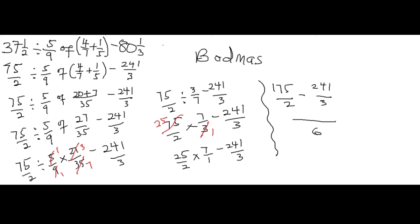Now we find the LCM of 2 and 3, which is 6. Three goes into 6 three times: 3 times 175 gives 525. Two goes into 6 three times... two goes into 6 three times: wait — 2 goes into 6 three times: 3 times 241 gives 482. Wait — actually 2 goes into 6 three times giving 525, and 3 goes into 6 two times giving 482. So we get 525 minus 482 over 6, which equals 43/6. Converting back to a mixed fraction: 6 times 7 is 42, remainder 1, so the final answer is 7 and 1/6. Thank you very much for watching — there are more questions coming!